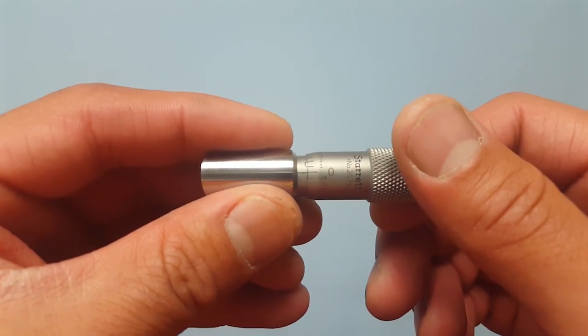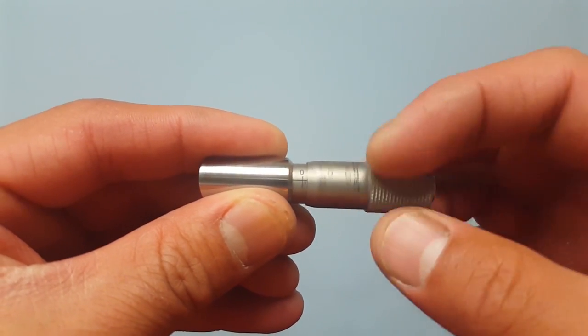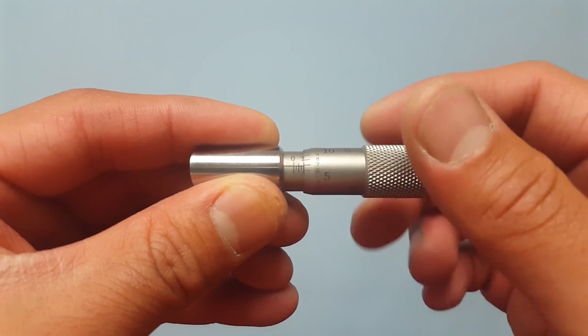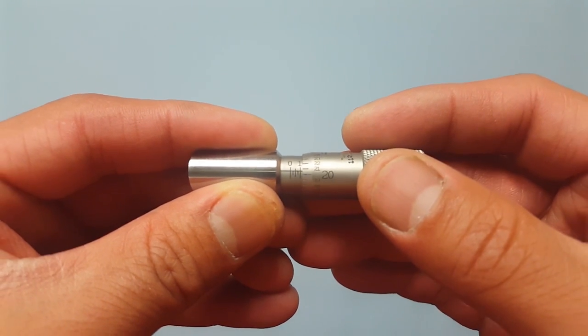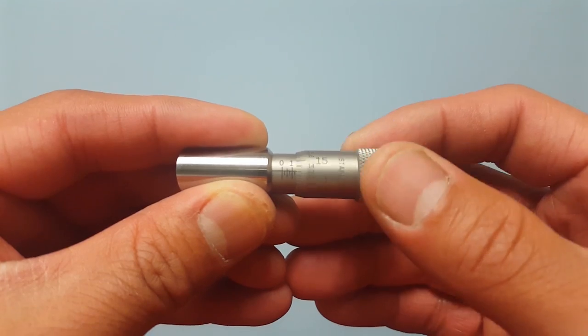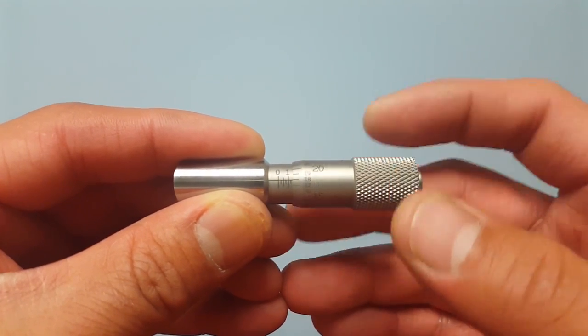How your can seam micrometer works is your inner barrel is divided up into 25 thousandths. Each little small tick is 25 thousandths and where the one is, that would be 100 thousandths of an inch.